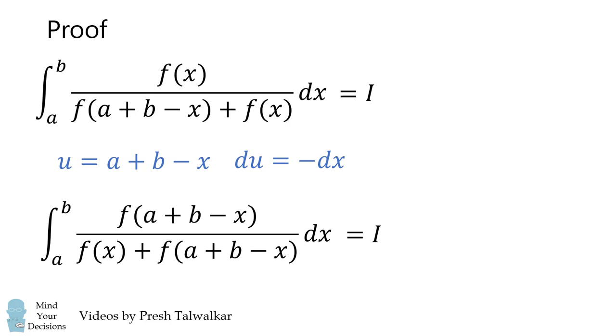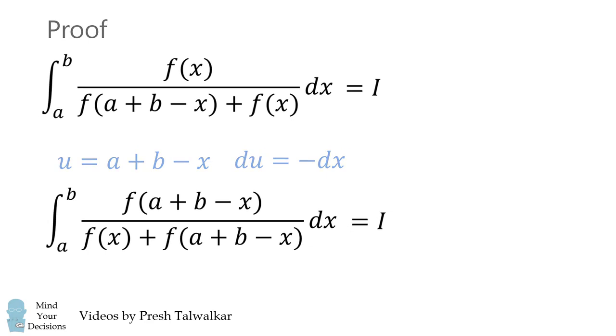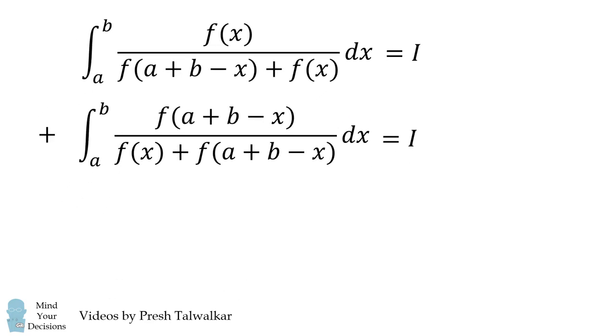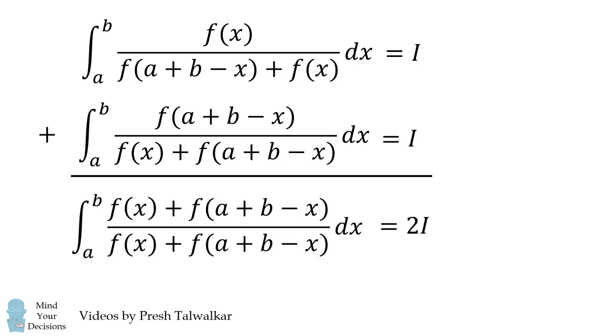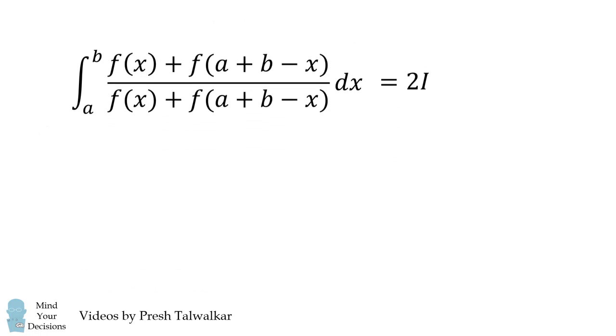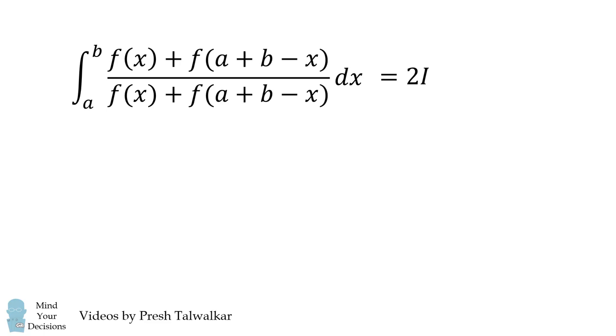So we have two different integrals that are equal to i. Let's add these up together. The result will be 2i, and on the left hand side it'll be the sum of these functions going from a to b. Well the sum of these functions will exactly cancel out. This is equal to 1.